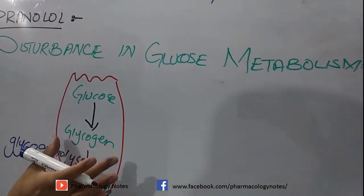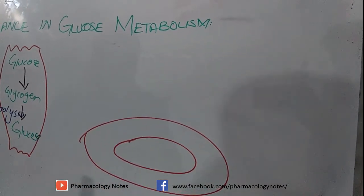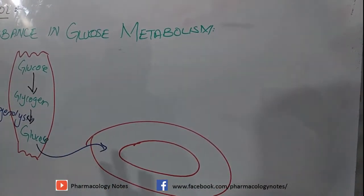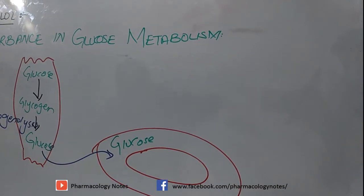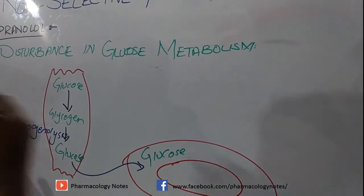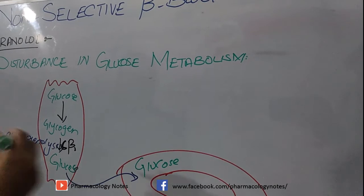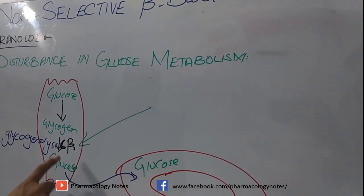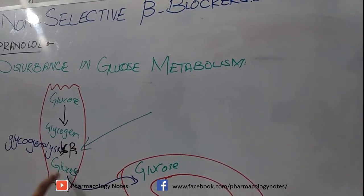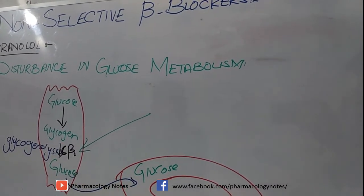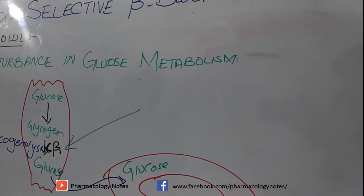Glycogenolysis is the conversion of glycogen back into glucose, which is then supplied to the blood for energy. In the case of propranolol, the beta-2 receptors present in skeletal muscle are blocked. Propranolol blocks these beta receptors, so no glycogen is converted to glucose — meaning no glycogenolysis, no glucose formation, and no glucose in the blood. As a result, glucose supply to the blood is diminished.